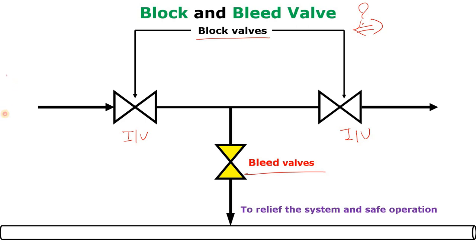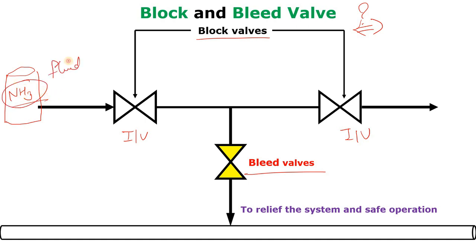Let's suppose there is one tank, and from this tank liquid ammonia is coming. You know that liquid ammonia is toxic — it is a toxic fluid. So it will go through this isolation valve and through this second isolation valve as well, to the pump.